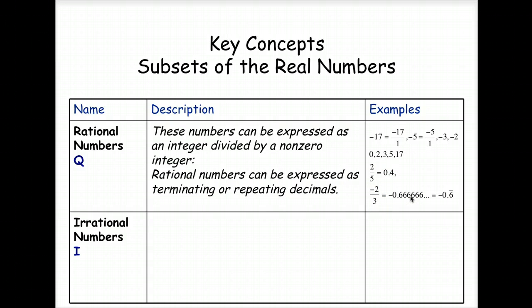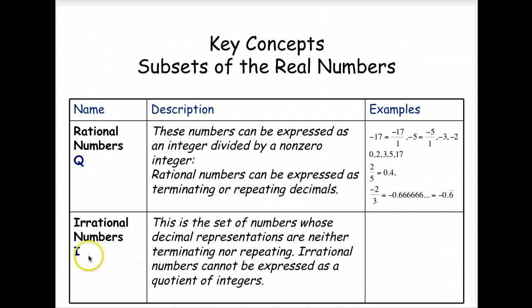And finally we have the irrational numbers, abbreviated with the I. And this is the set of numbers whose decimal representations are neither terminating nor repeating. Irrational numbers cannot be expressed as a quotient of integers. So they can't be written like this fraction. And these are some examples of irrational numbers. So if you need to pause the video for a moment before you go on, feel free to.